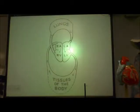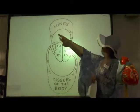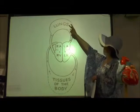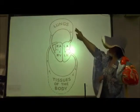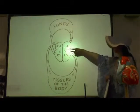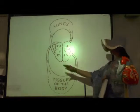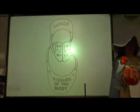The right side of the heart pumps deoxygenated blood to the lungs, where gas exchange occurs so we can pick up oxygenated blood and bring it back to the left side of the heart. The left side then takes that oxygenated blood out to the tissues of the body.